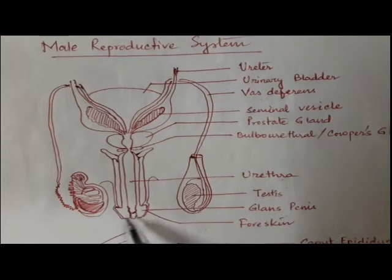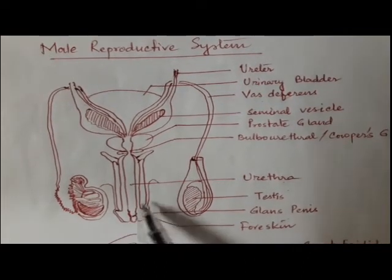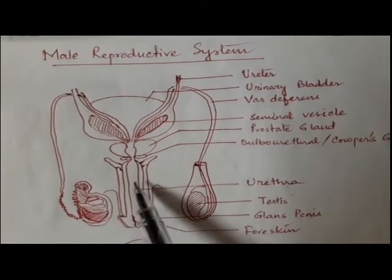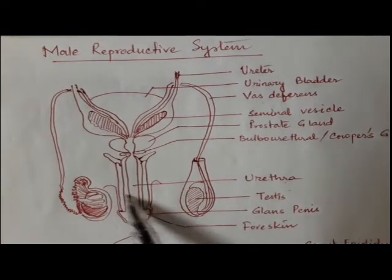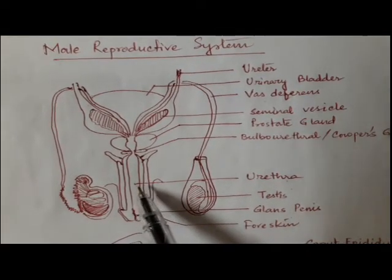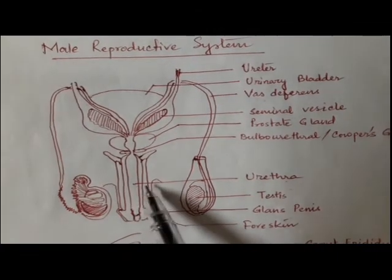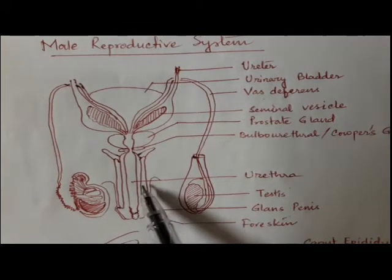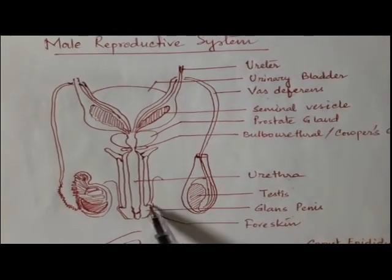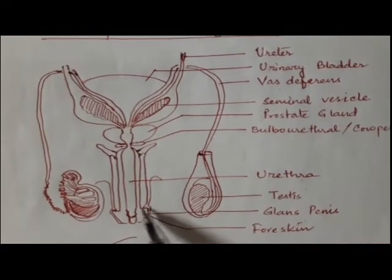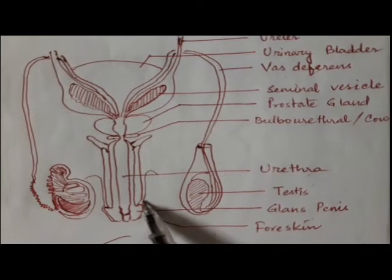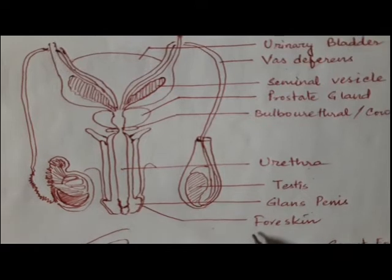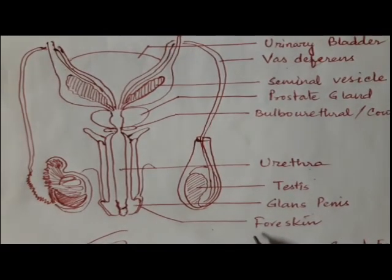If we see a cross-section of the glans penis, you will find that there are three columns of spongy tissue in this long shaft region — two corpora cavernosa columns and one corpus spongiosum. If you closely see the glans portion of the penis, you will find that there is a loose foreskin present, and that is given the name of prepuce — P-R-E-P-U-C-E.